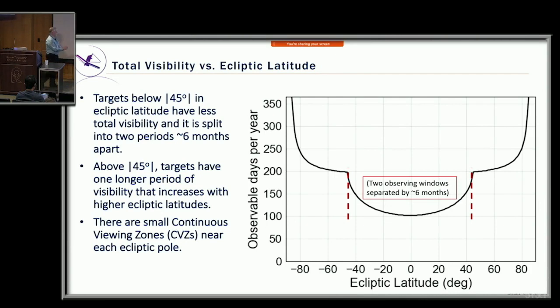Here is a graph with ecliptic latitude on the x-axis and total integrated days of observability on the y-axis. You can see there's no place on the sky observable for less than 100 days — which is really good. Things down at low ecliptic latitudes have two observing periods per year — two shorter periods that total up to about 100 days, perhaps 50 days in two different windows.